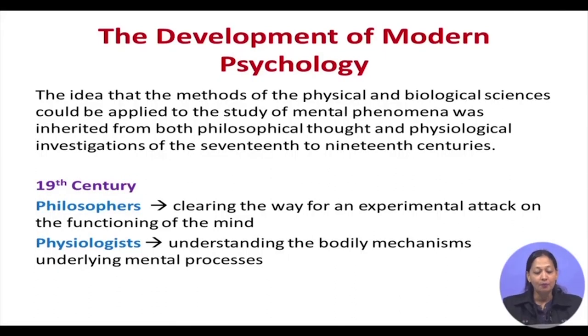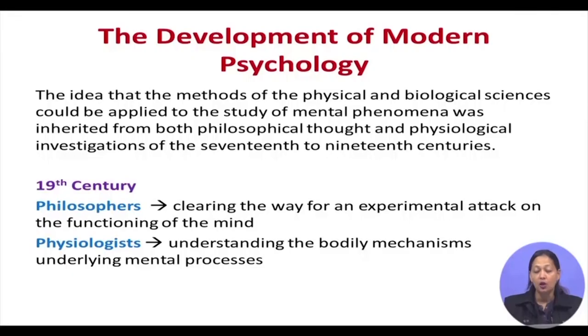Coming back to the development of modern psychology, we see that methods being used by the physical and biological sciences were being applied to mental phenomena. These ideas, along with physiological and philosophical thoughts, were incorporated into this new branch of science in the nineteenth century. Philosophers were clearly looking towards an experimental way of approaching the mind. So far the question was 'What is mind?' — now it became 'Where is the mind?' and 'What areas do we need to experiment on to understand that mind exists?'